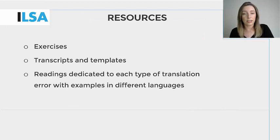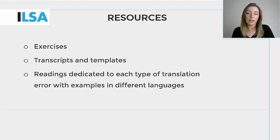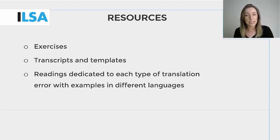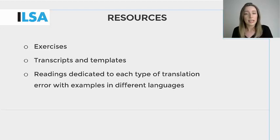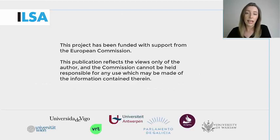You may have already come across these translation errors and issues while practising interlingual re-speaking in this module. In Module 3A, you will have the chance to apply the NTR model to assess your interlingual re-spoken outputs. Transcripts and templates like the one that you saw in the previous slide are available for each video provided in the exercises. There are also some short readings on each type of translation error with examples in different languages. Do remember that although quality assessment models such as the NTR model focus on the end product, they can also be used in your training as a form of self-assessment, as the quantities of errors that you make can help to identify your strengths and weaknesses in interlingual re-speaking. Well done for almost completing Module 2B and good luck for Module 3A.